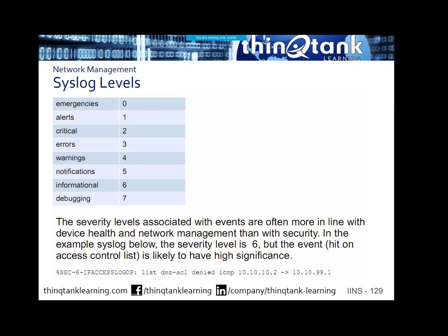Here are the different levels: zero is emergencies — basically means the system is unusable. Level seven is debugging, meaning you're trying to capture information about events occurring on the device. Then you go down to informational at level six, notifications at level five, warnings at level four, errors at level three, critical at level two, alerts at level one, and emergencies at level zero.